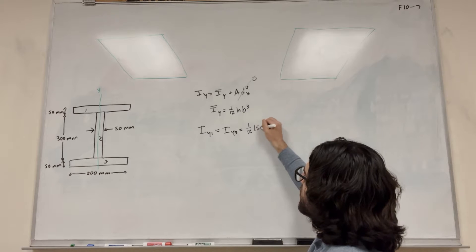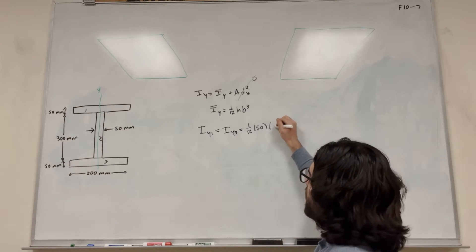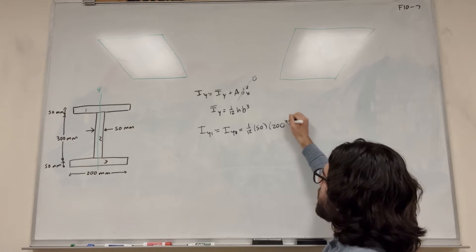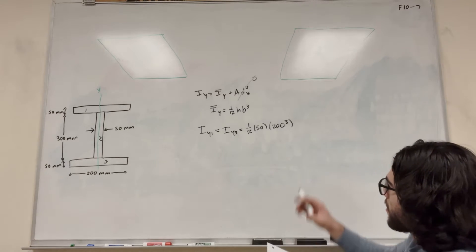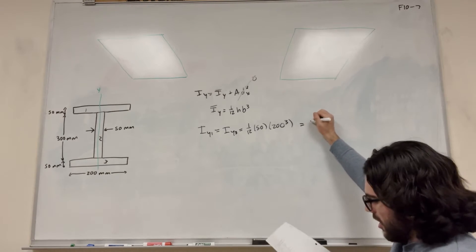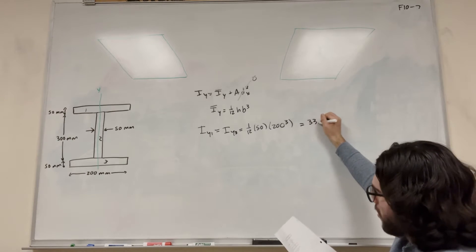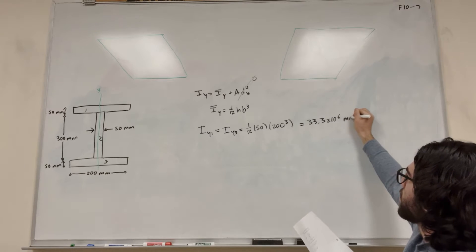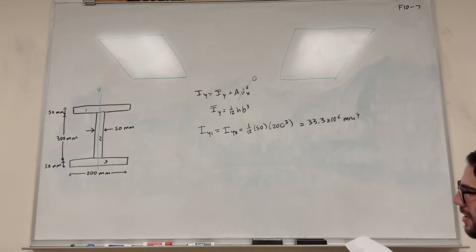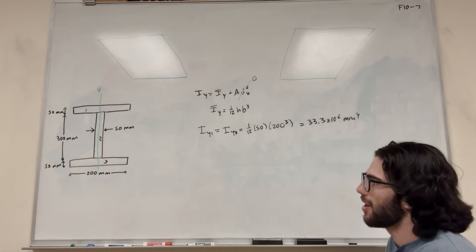So its height is 50 and then its base is 200. And we've got to cube that 200 because that's just the equation there. So then we're going to find that this number is equal to 33.3 times 10 to the sixth millimeters to the fourth. Okay, so we figured out two-thirds of the problem already.